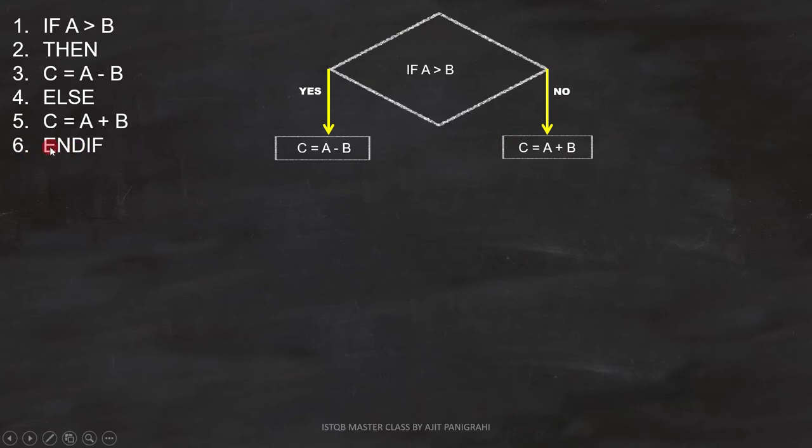Now the line number 6 is important, which is ENDIF. ENDIF is used to terminate the if statement, and this is how it is represented in the flowchart. The first condition ends here. Line number 7, Read D, is a statement, and it is represented like this.